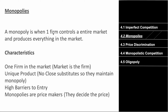A monopoly is when one firm controls an entire market and produces everything in it. The characteristics of a monopoly are: one firm in the market, a completely unique product with no close substitutes — monopolies want everyone to need their product with no competition — and very high barriers to entry so that no other firms can enter the market.